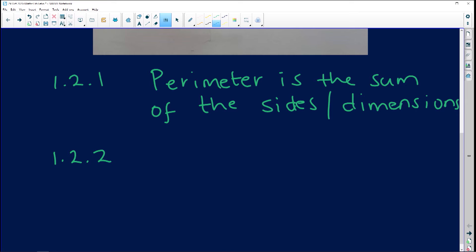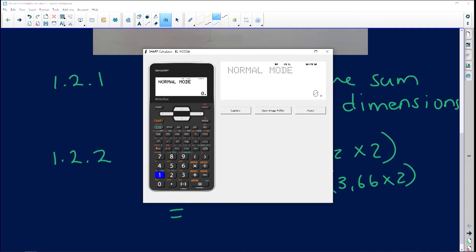Okay. 17.68. So P, let me use the same for uniform. P is then going to equal to side 1 times 2 plus side 2 times 2 because they are the same. So side 1 is 17.68 times 2 plus side 2 is 3.66 times 2. Let's go put that in our calculator.